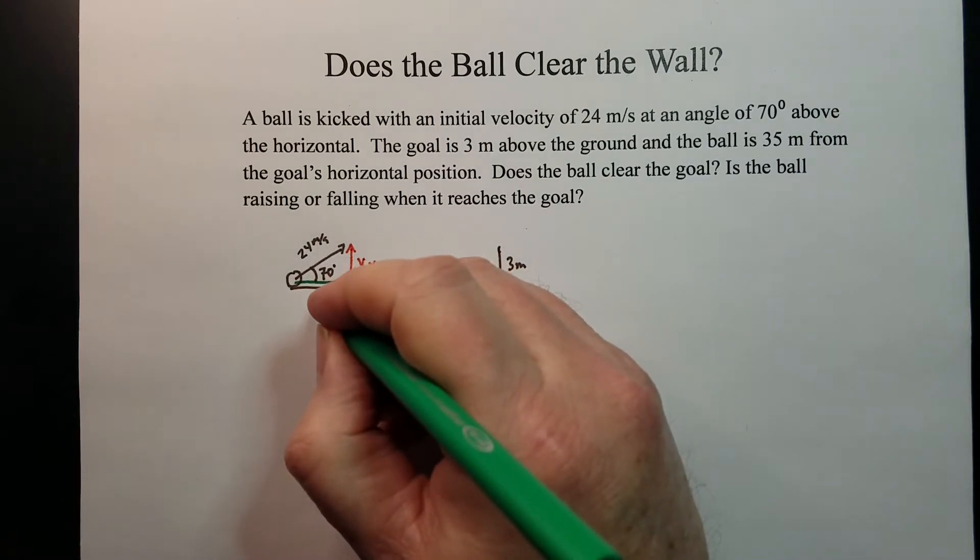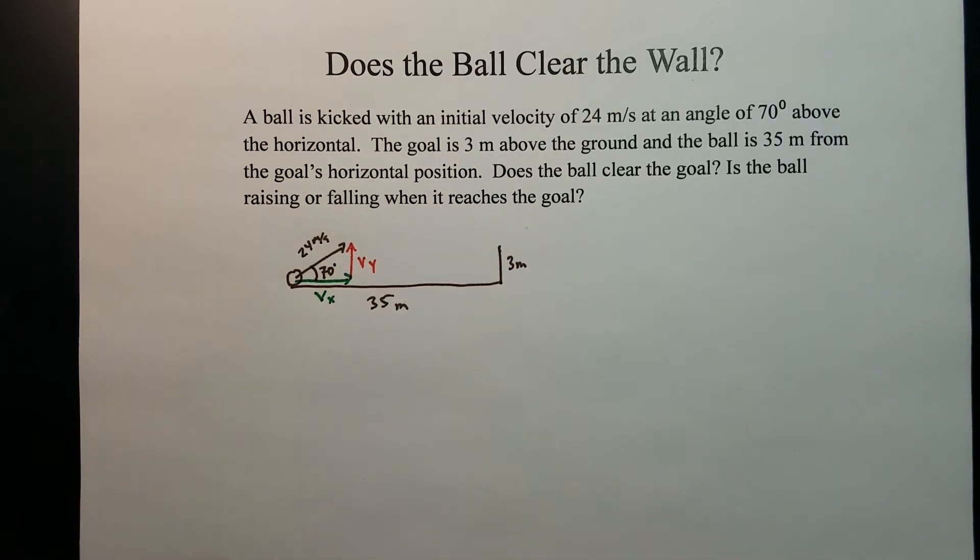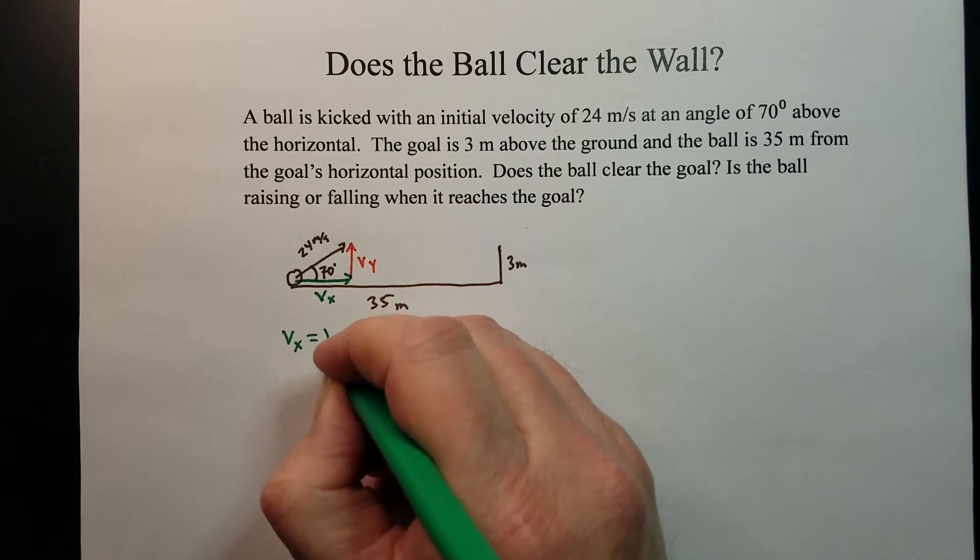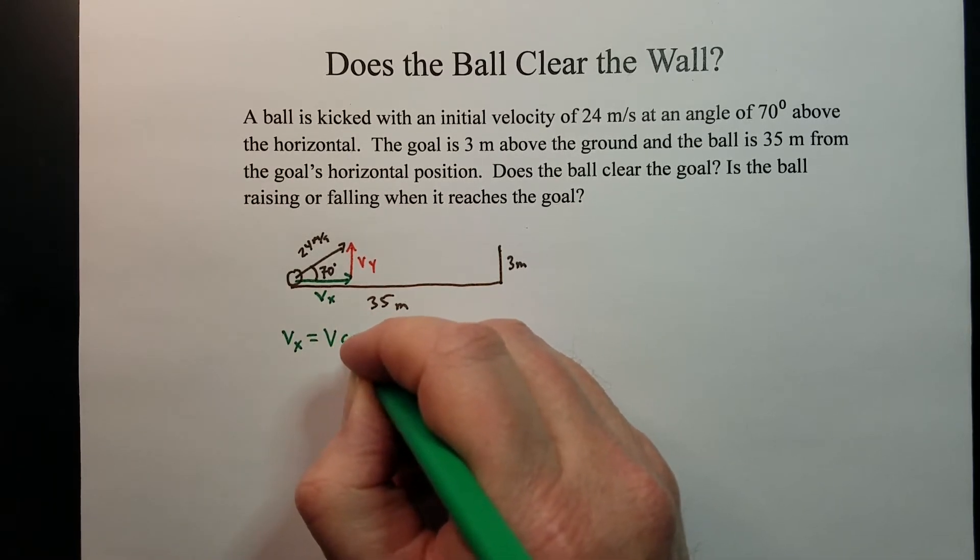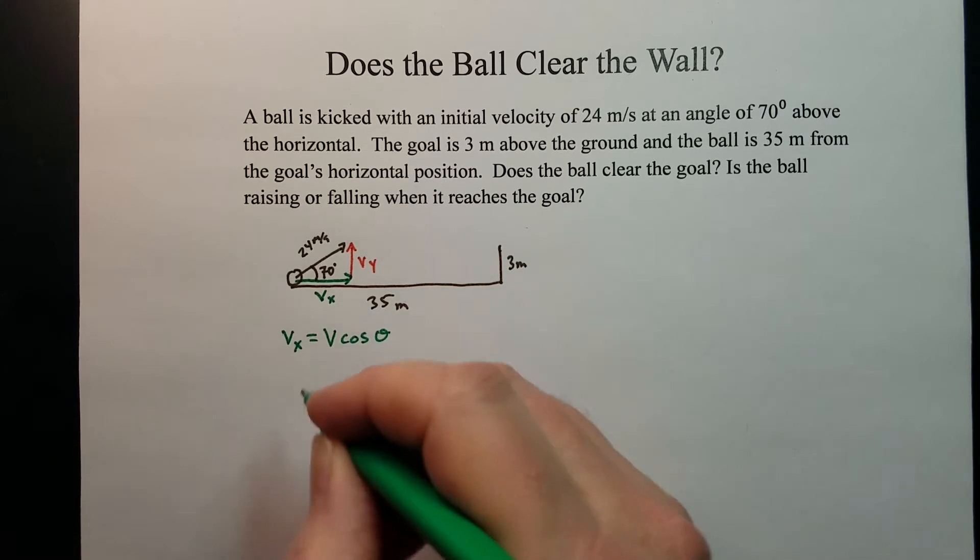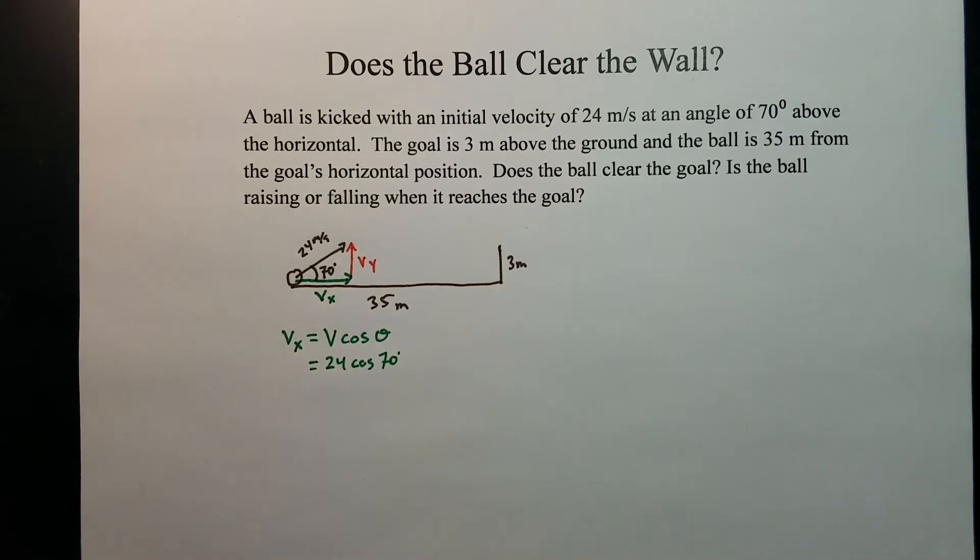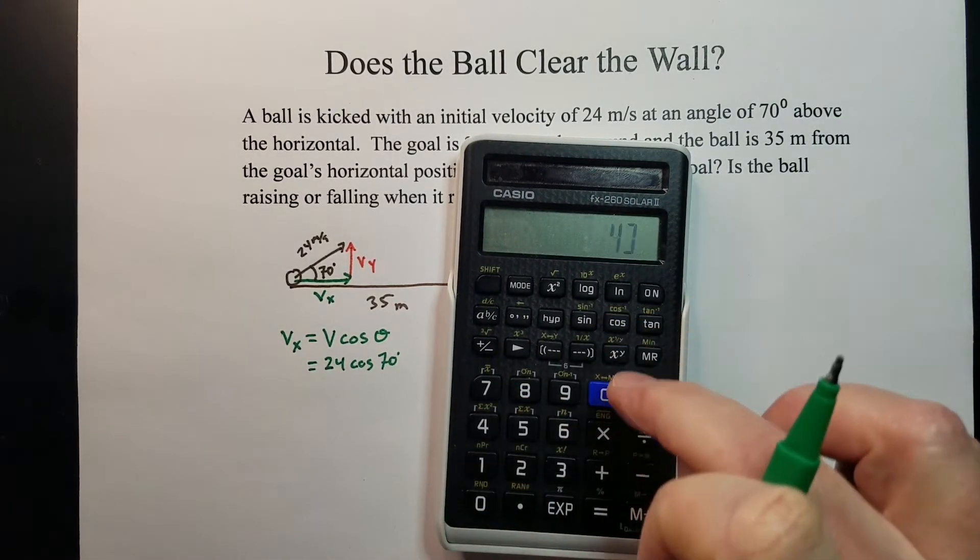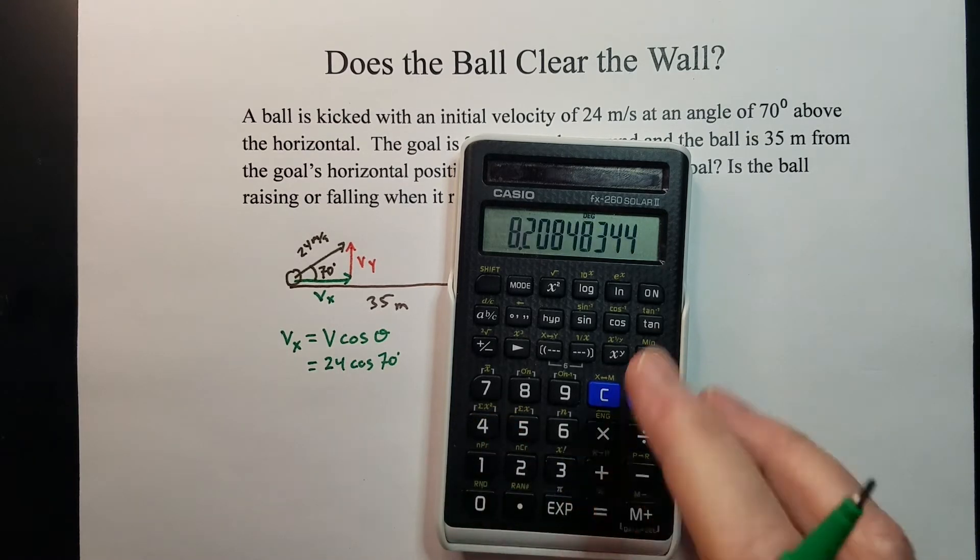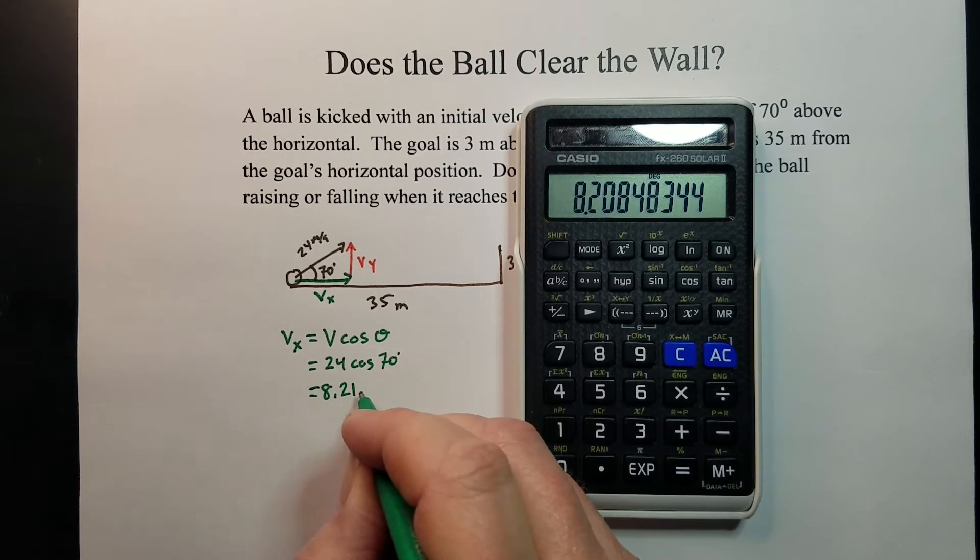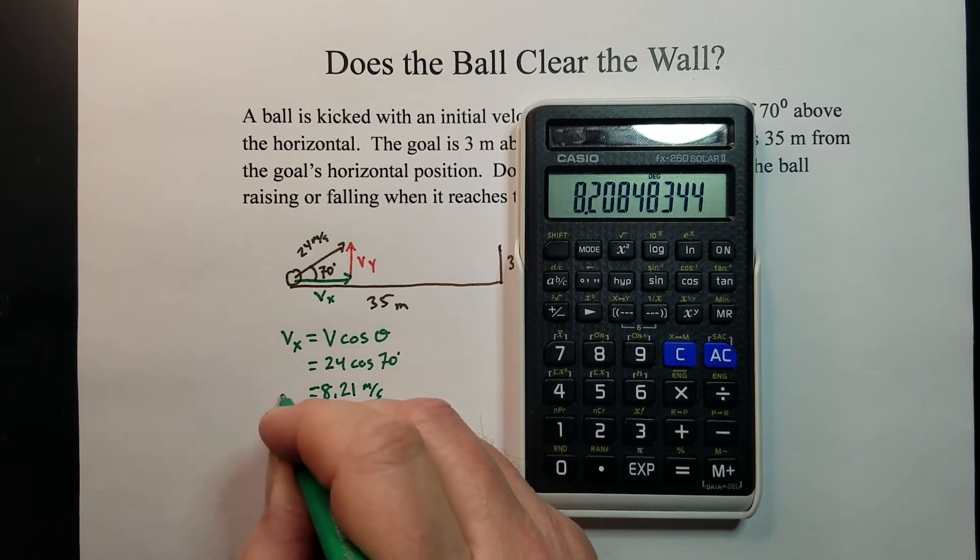And because we can look at these two motions independently of each other. For some basic trigonometry, velocity in the x would be equal to the velocity times the cosine of our angle. In this case, it would be 24 cosine of 70 degrees. And that gives us a velocity of 8.21 meters per second in the x direction.